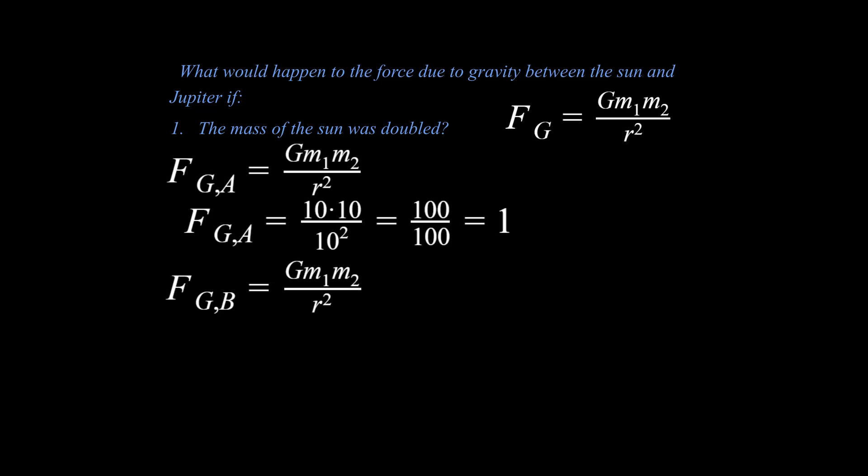We write the equation again. Think about what we need and what we don't need. We don't need this G value. We're going to change this. What if the mass of the sun was doubled? I'm going to double what the original value was. It was originally 10. Doubling that makes it 20. I do my ratio. I do my simple math. I come up with an answer of 2.